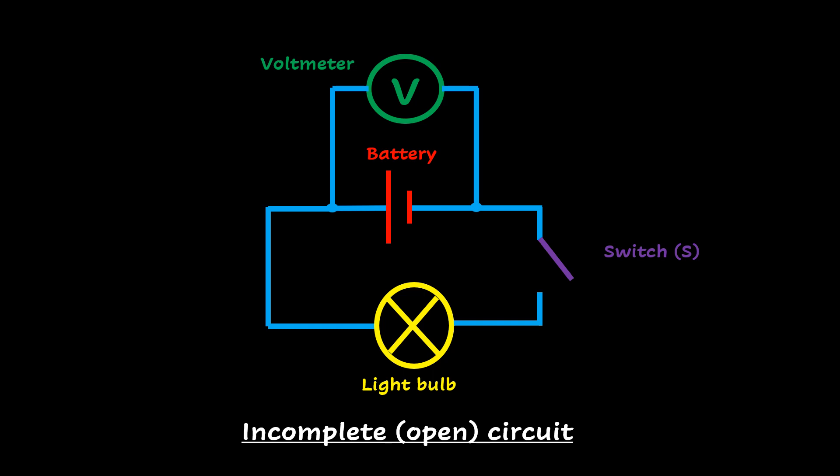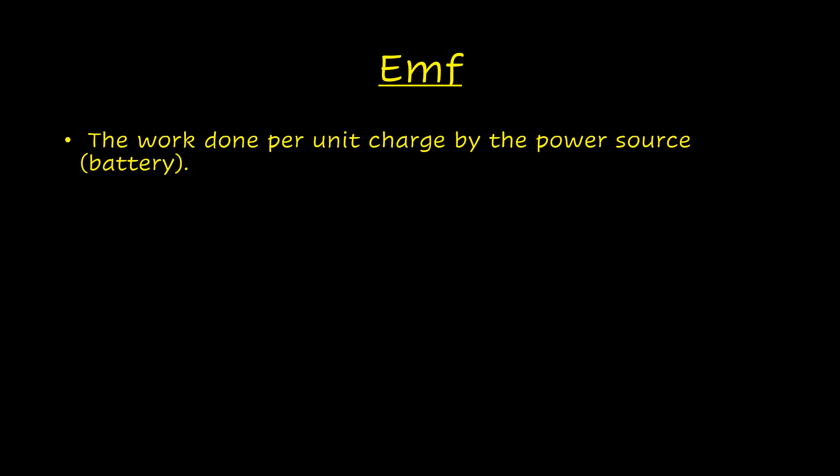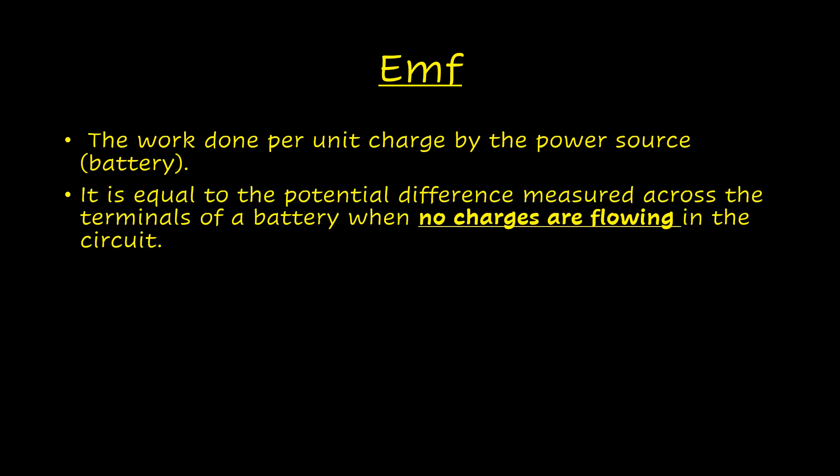When you measure the potential difference across the terminals of a battery in an open or incomplete circuit, you are measuring the EMF of the battery. This is the maximum amount of work per coulomb of charge that the battery can do to drive charge from one terminal through the circuit to the other terminal. We can define EMF as the work done per unit charge by the power source, equal to the potential difference measured across the terminals of a battery when no charges are flowing in the circuit.